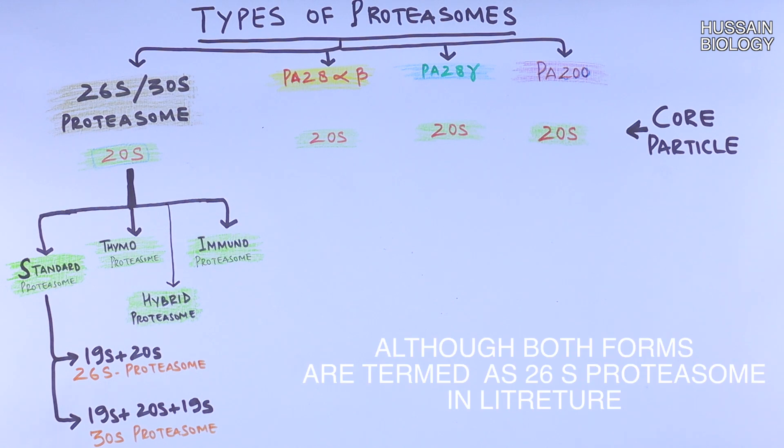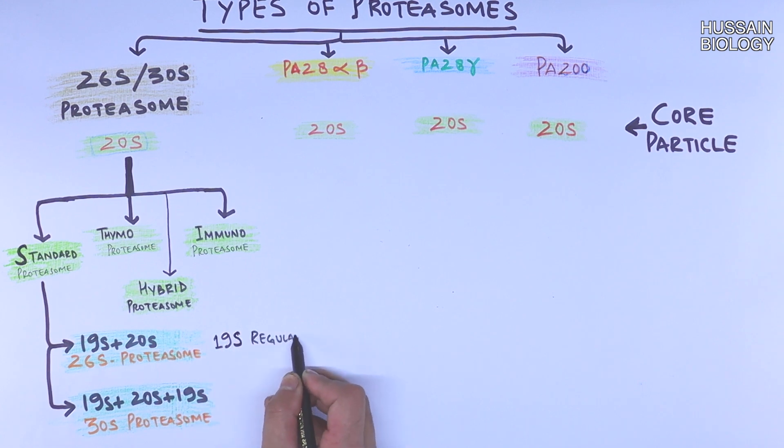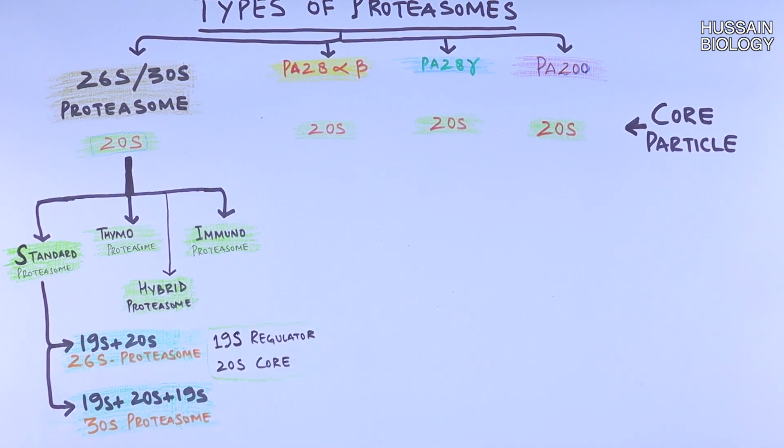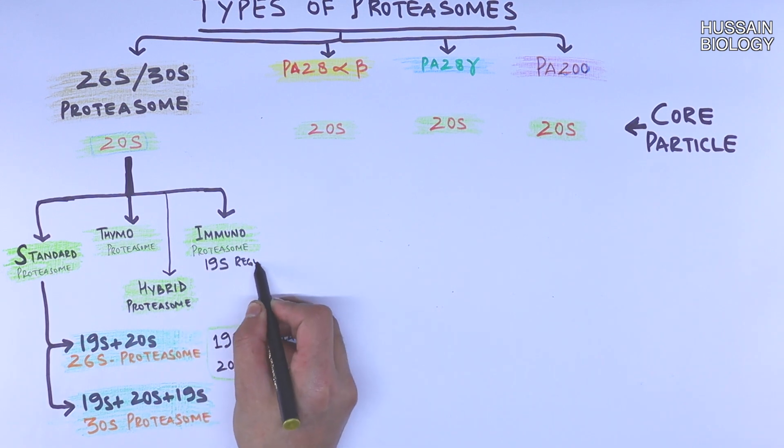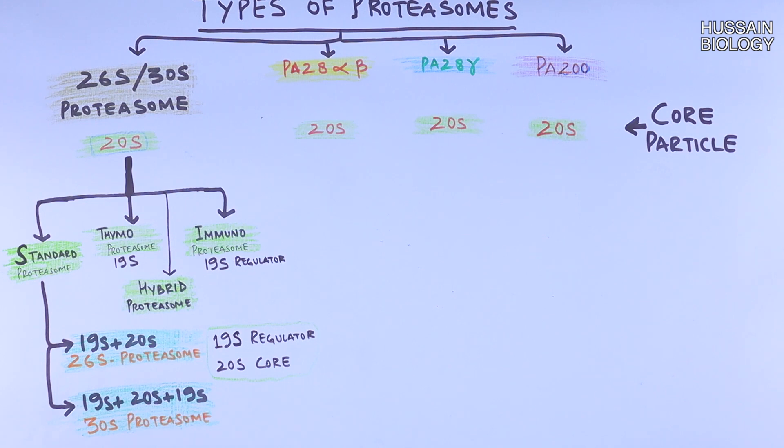But in literature and books you will find that this 19S plus 20S plus 19S is termed as the 26S proteasome, which isn't the actual case here. So for standard proteasome we have 19S as regulatory molecule, and for immuno and thymoproteasome we also have 19S regulatory molecules. But things change here - the hybrid proteasome has got 11S and 19S as regulatory molecules.